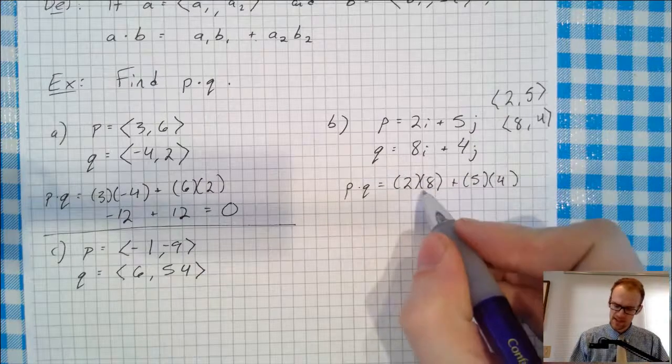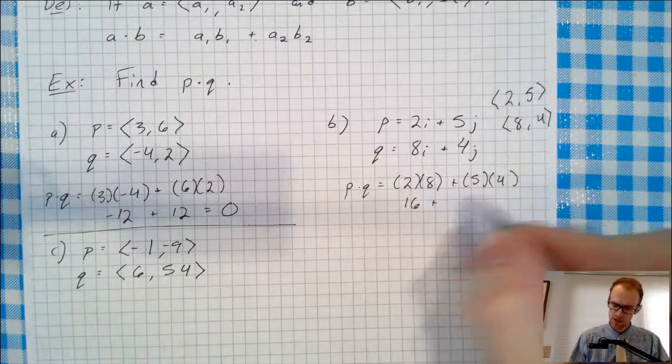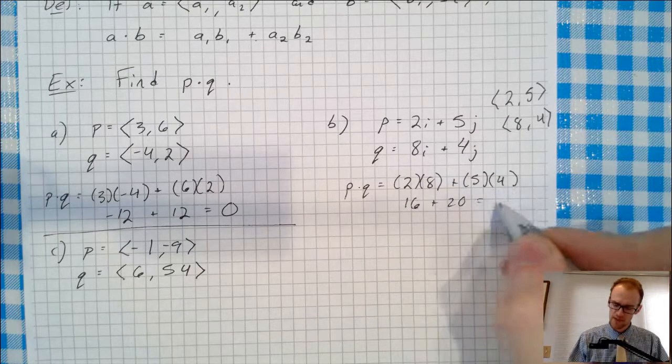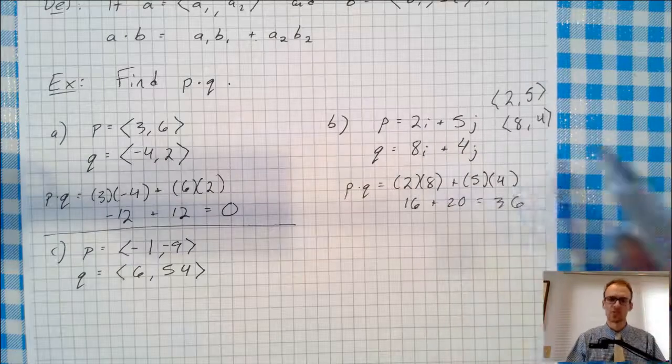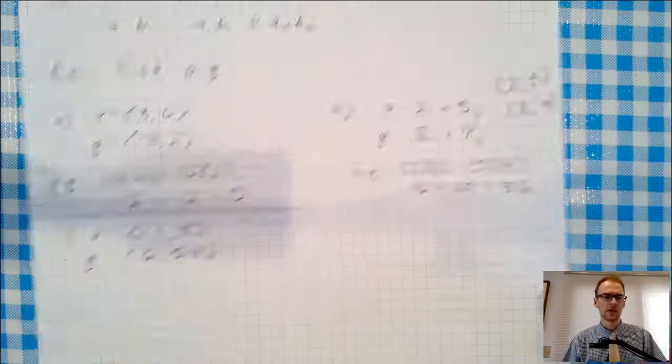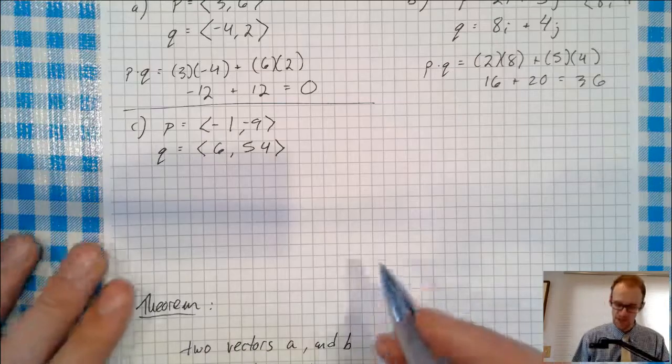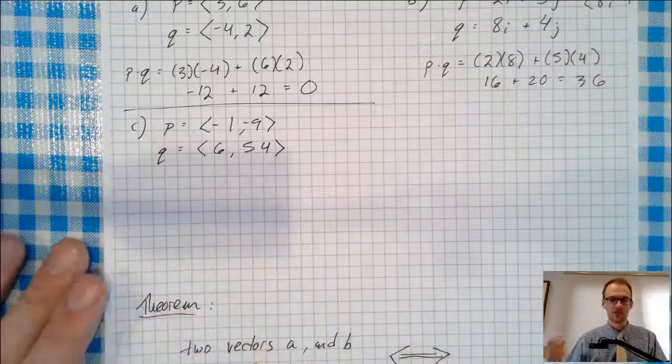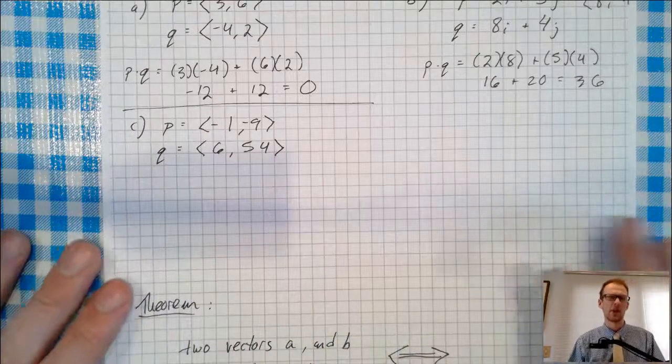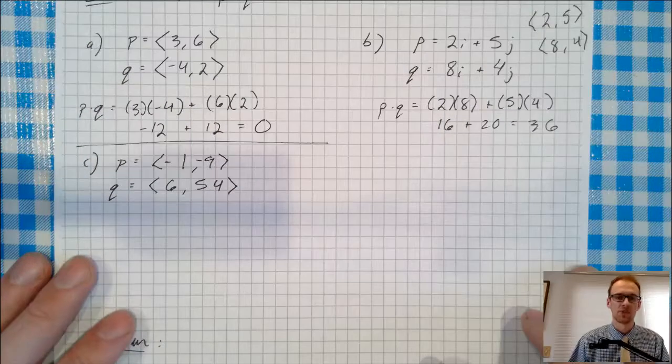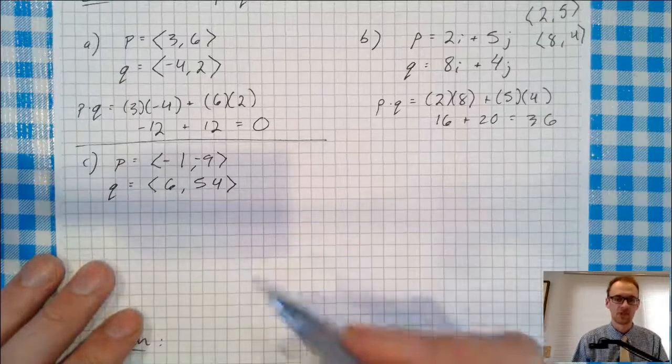2 times 8, 16, plus 20. That's 36. So P and Q have a dot product of 36. Okay, one more. You'll see why I'm doing three of these when we get to the next video, because all three of these pairs of vectors have different properties. I'll get to those in the next video, but let's just practice doing the dot product here.